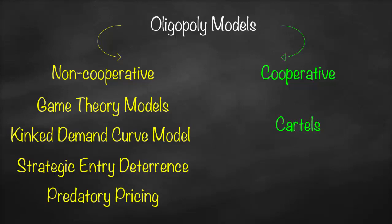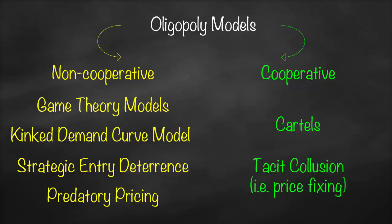For cooperative models, firms could work as cartels, such as OPEC, or through tacit collusion, where they try to fix the price.